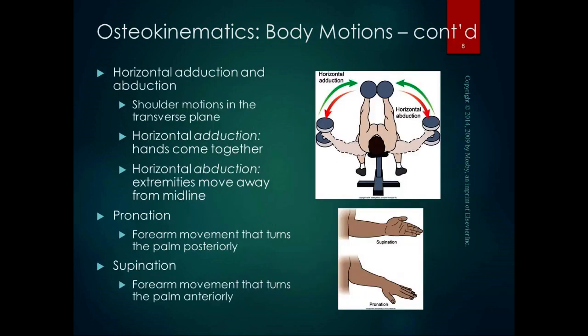Horizontal adduction and abduction are specific to the shoulder only — shoulder motions in the transverse plane. The starting position is not anatomical position; you begin with the arms at 90 degrees of abduction, like a T-position. Horizontal adduction brings the hands together, like a chest fly; horizontal abduction moves the extremities away from the midline.